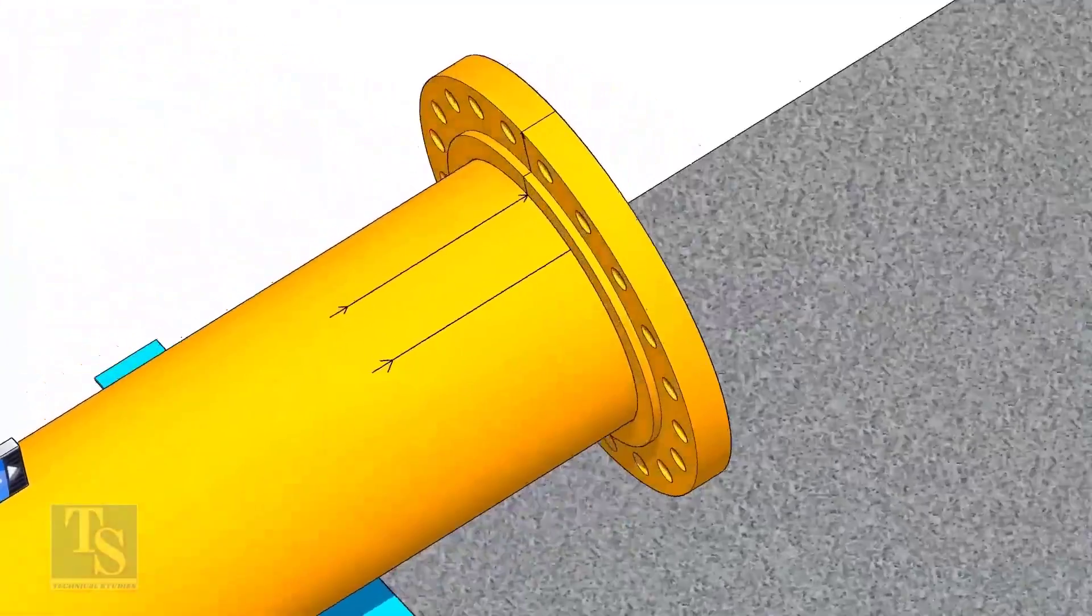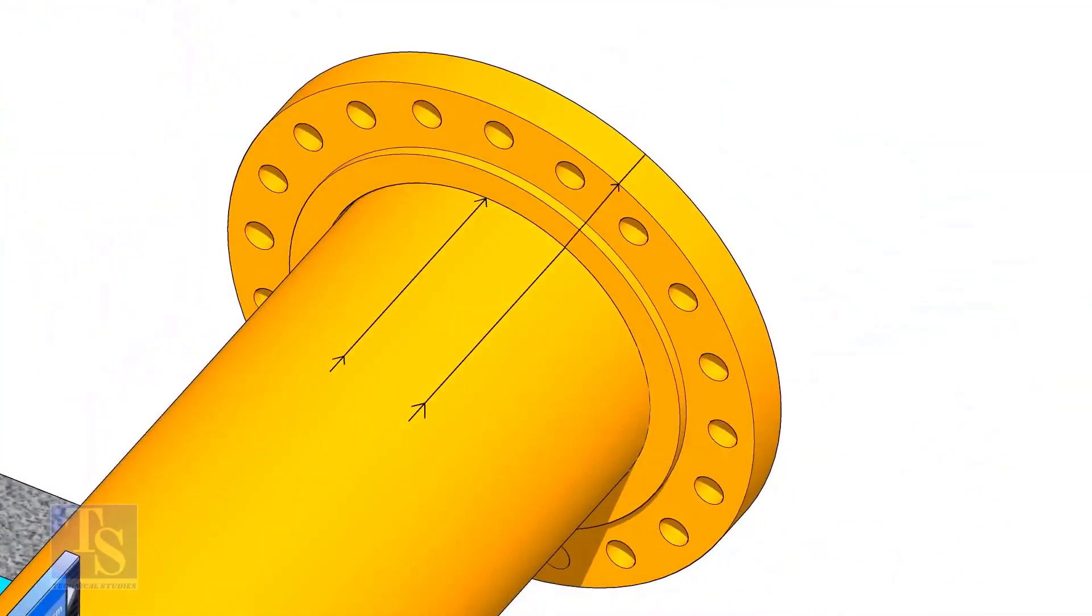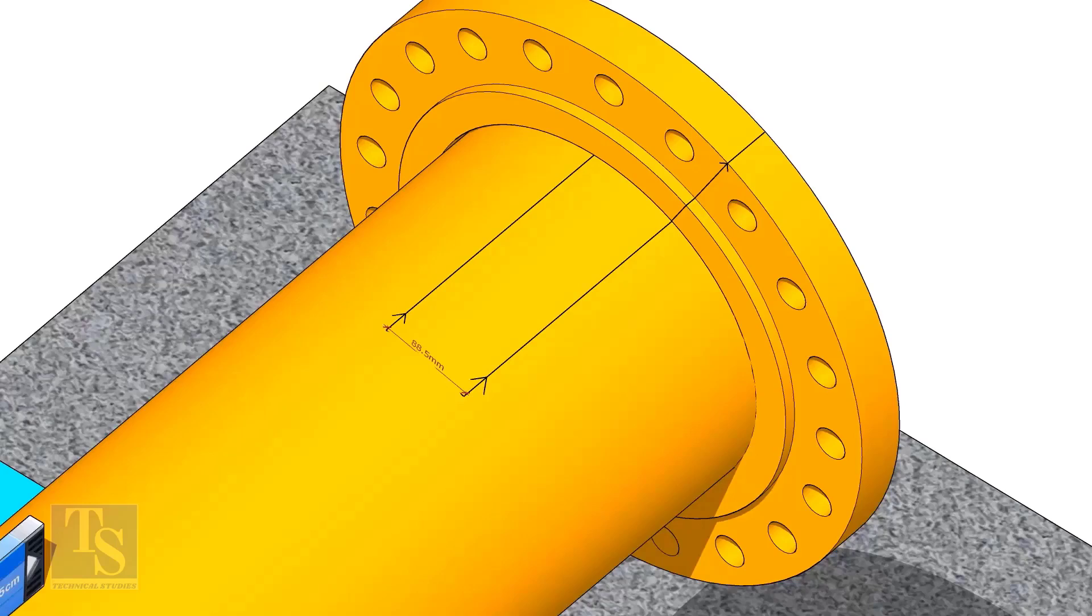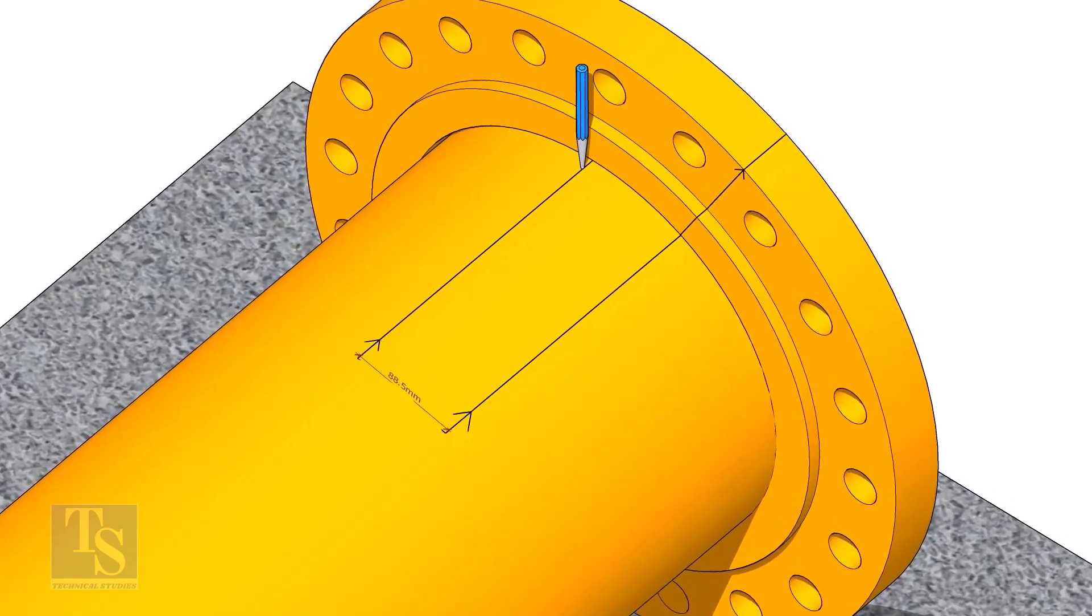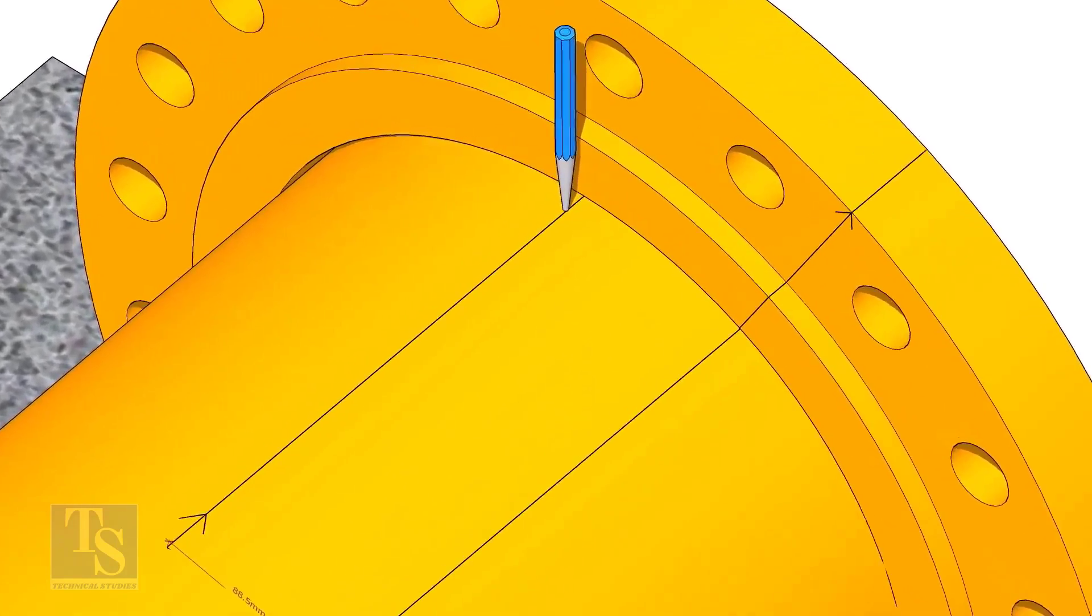Put the flange on the pipe. Rotate the flange until the center line on the flange and the 25 degree line on the pipe comes in a line. Don't forget to punch mark the center lines.